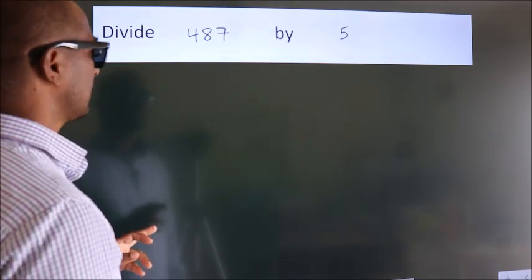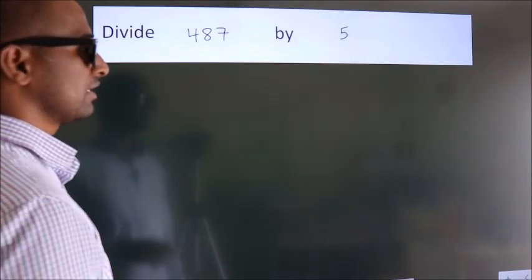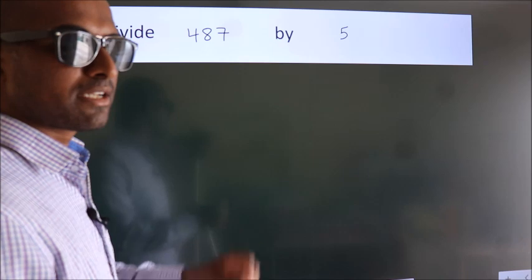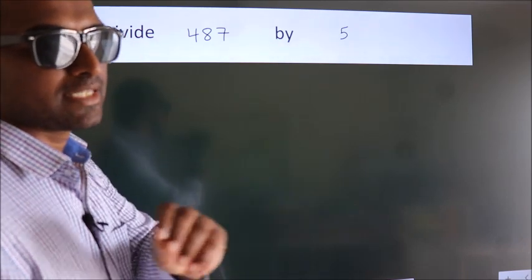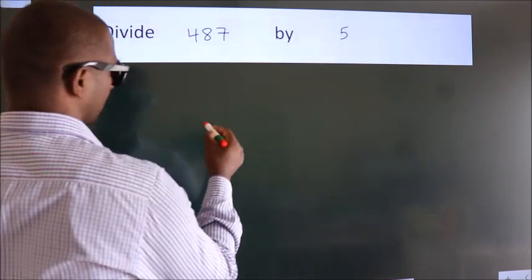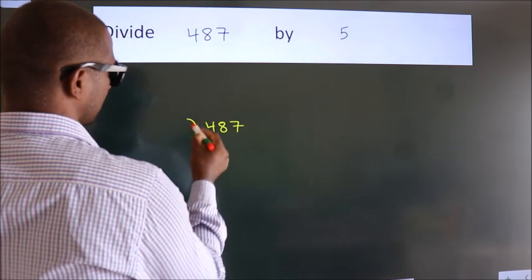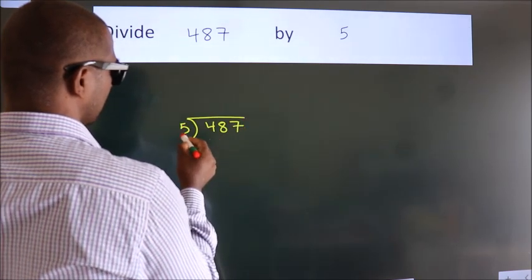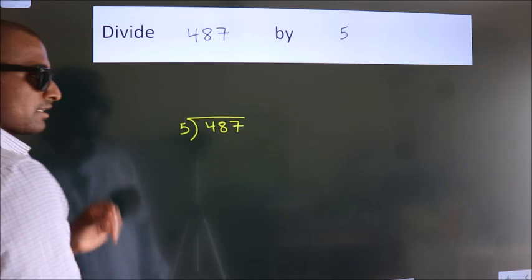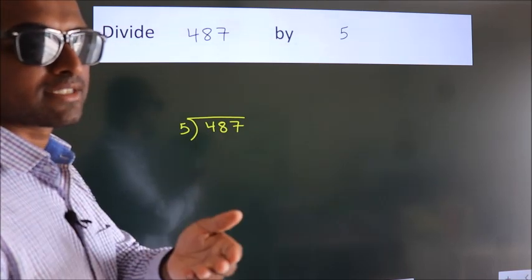Divide 487 by 5. To do this division, we should frame it in this way: 487 here, 5 here. This is your step 1.